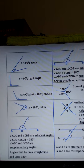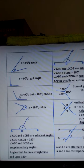Three is an obtuse angle. An obtuse angle is greater than 90 degrees. It can be 110 degrees, 120, and so on. It is more than 90 degrees but less than 180 degrees.